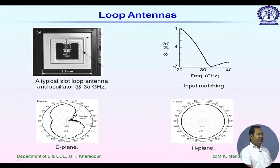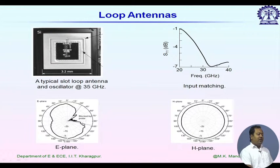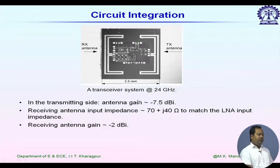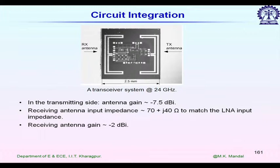Looking at the radiation pattern: in the E-plane, there is no significant radiation on one side. This is not due to the antenna itself but due to the measurement setup — that side is blocked by the probe station, since it is measured using a probe station. We do not have such a problem in the H-plane radiation pattern. Now we know how to choose the type of radiator. The next question is how to integrate them inside the chip.